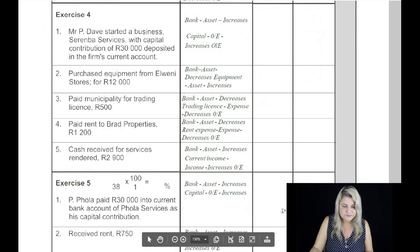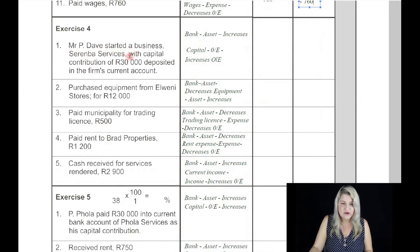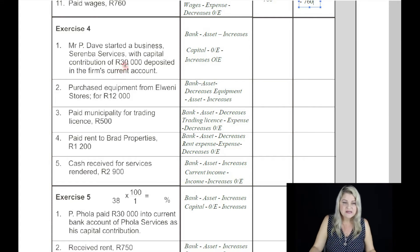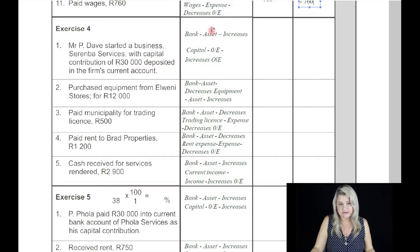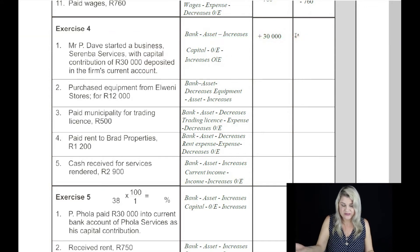Exercise number four. On the first: Mr. P. Dave started a business, Serenba Services, with a capital contribution of 30,000 Rand deposited into the firm's current account. When an owner gives the business money as a capital contribution, he's actually lending the money to the business — he would transfer it from his personal bank account to the business's bank account. The two accounts affected are bank and capital. Bank is an asset which increases by 30,000 Rand. And when it's a capital contribution, owner's equity also increases by 30,000 Rand.